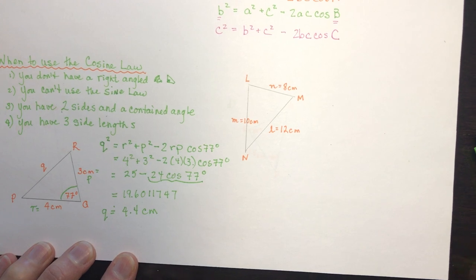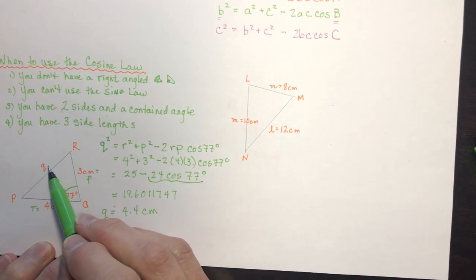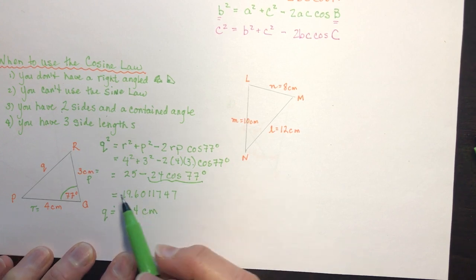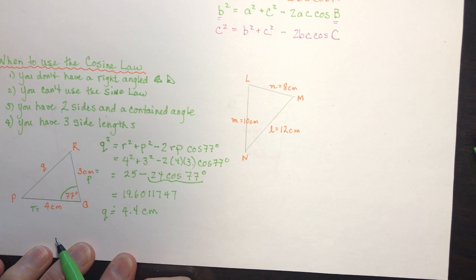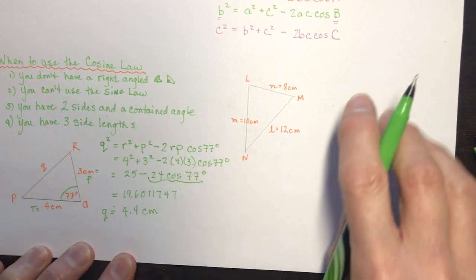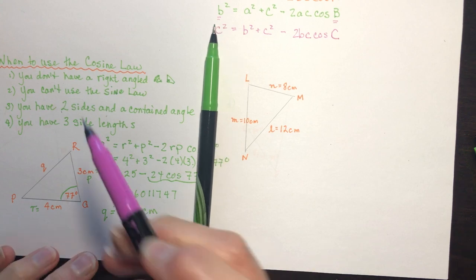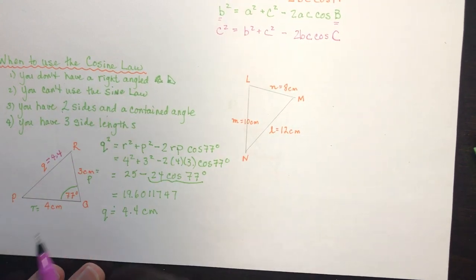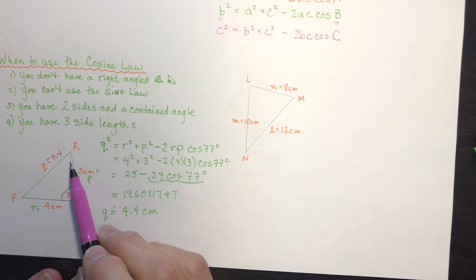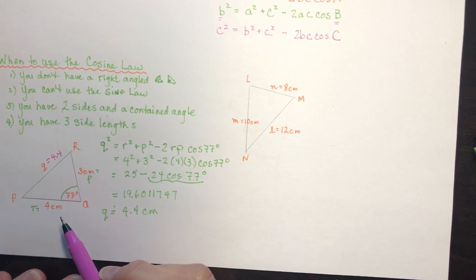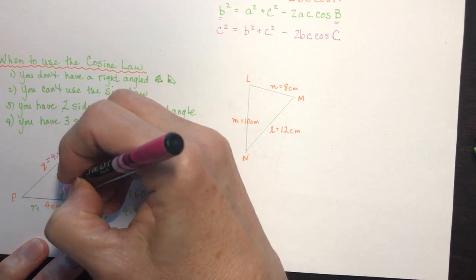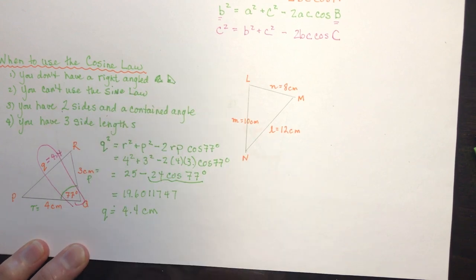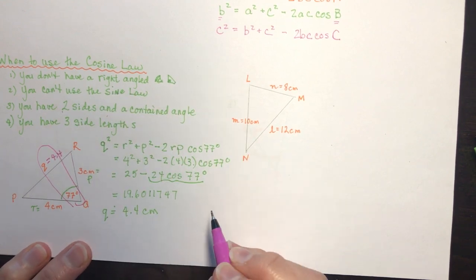Now I've solved for side q. If you were asked to solve the whole triangle, you'd have three sides and one angle. You only ever need to use the cosine law once per question. After that, you can use the sine law to find the remaining angles.